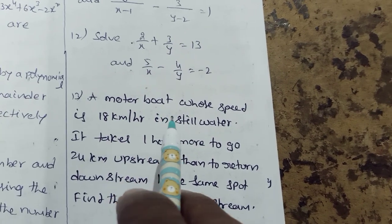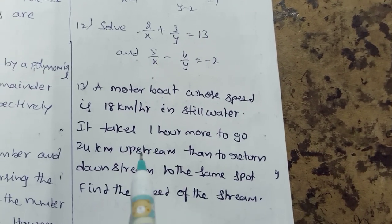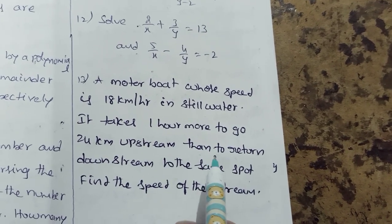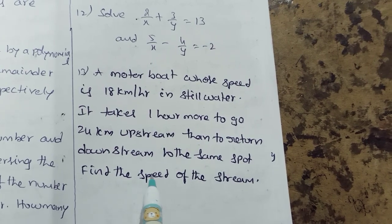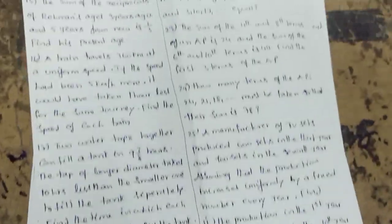A motorboat whose speed is 18 km per hour in still water takes 1 hour more to go 24 km upstream than to return downstream to the same spot. Find the speed of the stream.